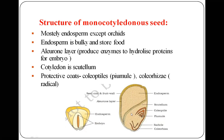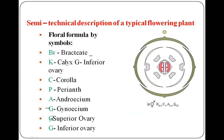In monocot seeds, there is only one cotyledon, which is called the scutellum. There are also protective coats: the covering over the plumule region is called the coleoptile, and the covering over the radicle region is called the coleorhiza.